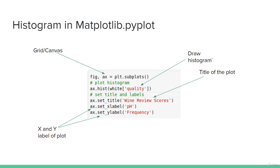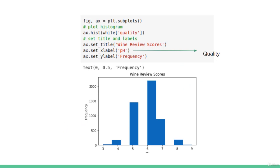We call the histogram function on the canvas and specify the quality column to visualize its distribution. We set the title, and the X and Y labels. Note there is a small mistake in the code — the X label is initialized as pH but we are actually visualizing quality. Regardless, the label text does not change the context of the function. Running this code will produce the histogram.